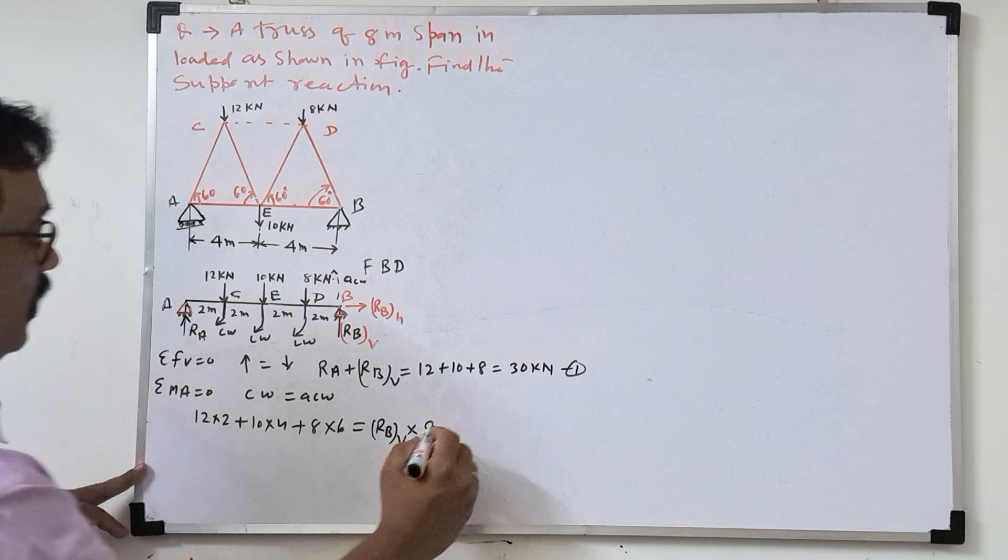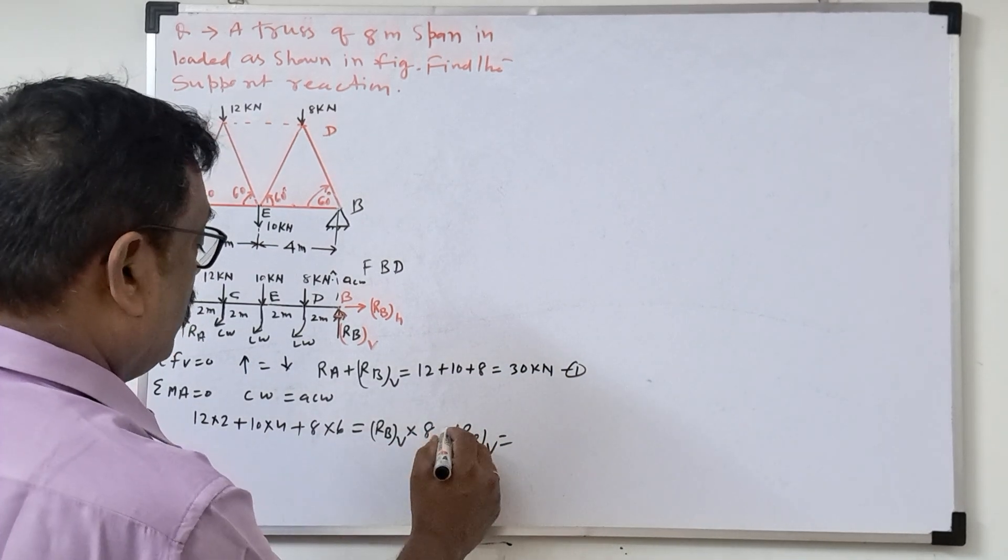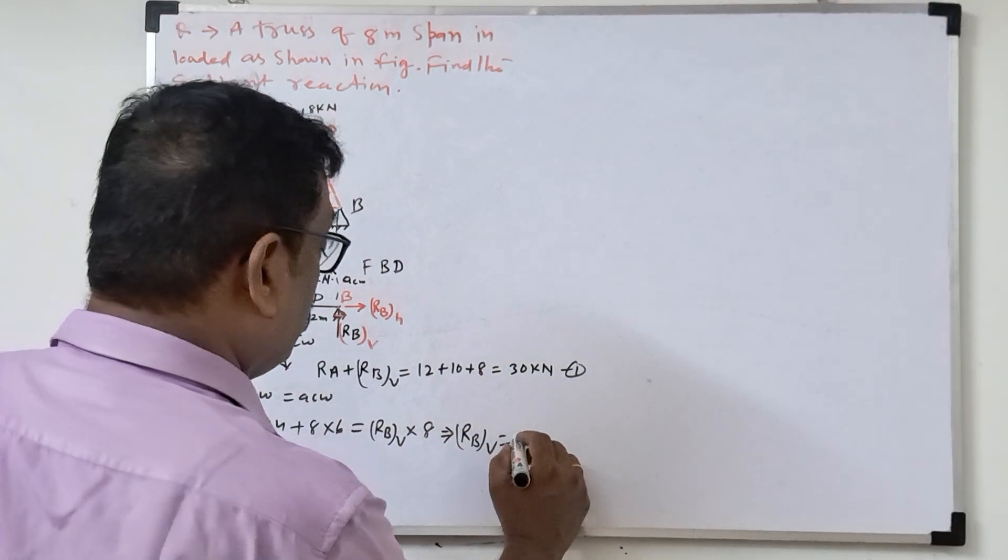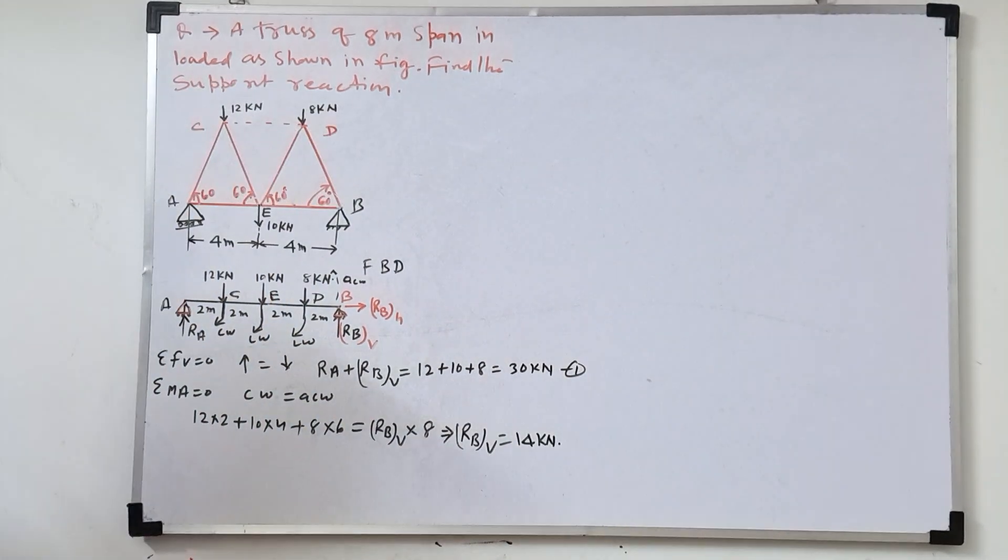So here what we'll get? RBV will get here. How much RBV will get here? 14 kilonewton. If you'll calculate this, it will get the 14 kilonewton.